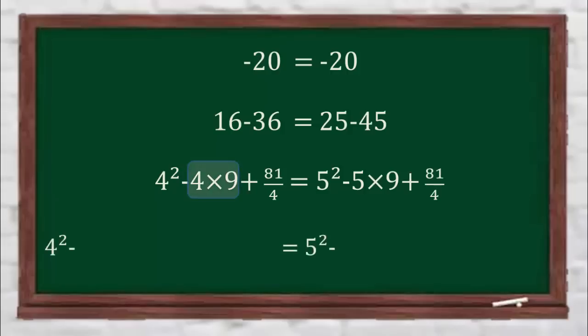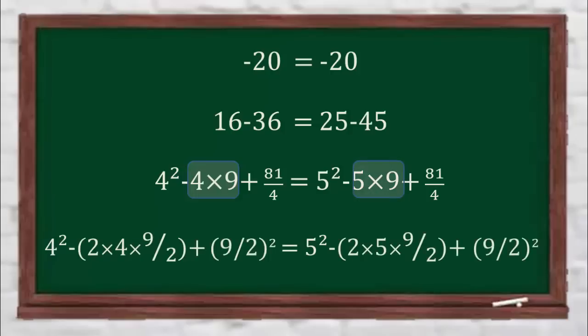Now in the second term multiply by 2 and divide by 2. The same way on the right hand side in the second term multiply by 2 and divide by 2. And now on both sides we'll write 81 by 4 as 9 by 2 whole square.